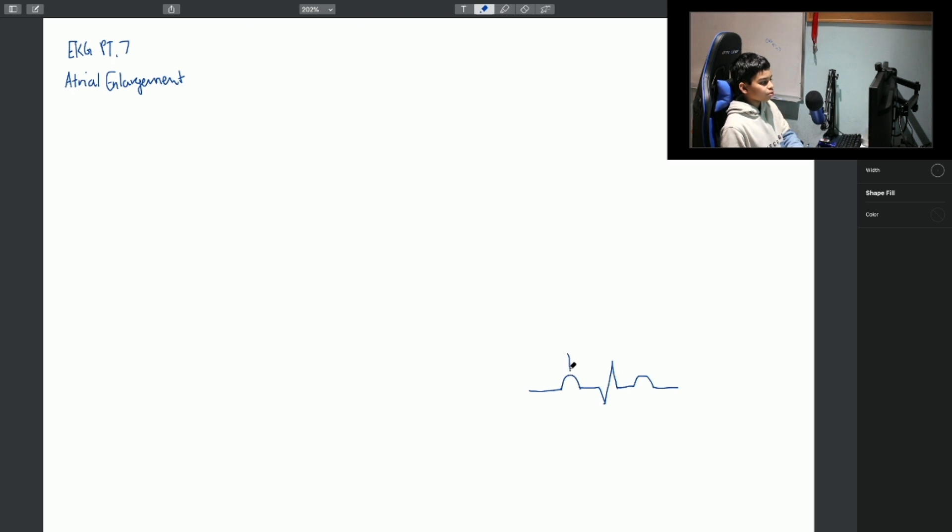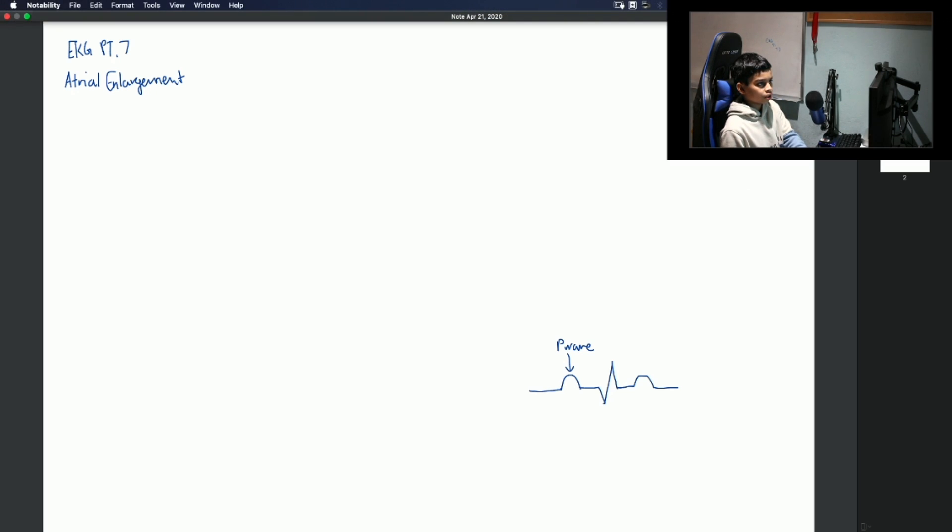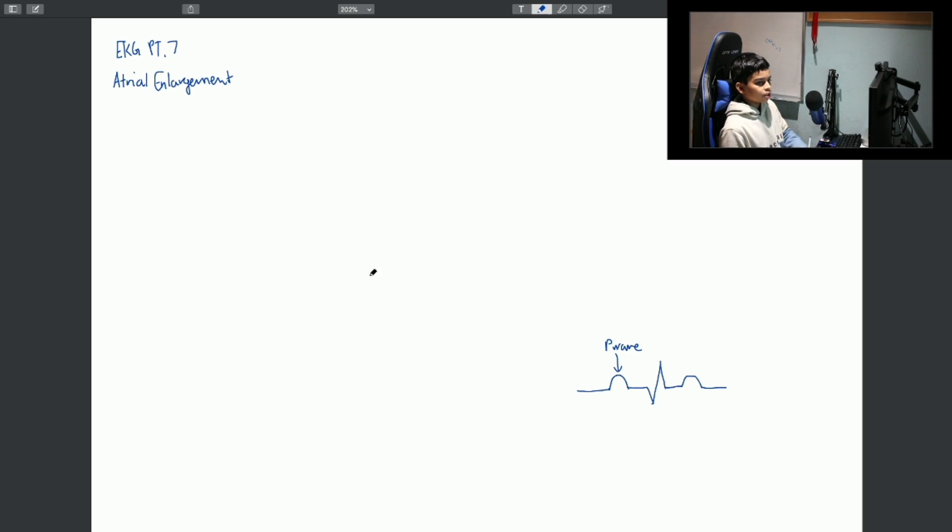So this would be the P wave, and that represents atrial depolarization. Let's get this down. That represents atrial depolarization. So a normal P wave is 0.12 seconds in duration. And on the EKG paper, the voltage does not exceed 2.5 millimeters on the EKG paper.